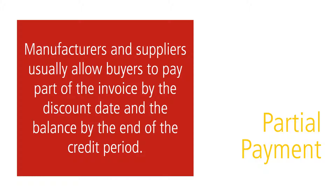Sometimes buyers do not have all the money needed to take advantage of the cash discount. Manufacturers and suppliers usually allow them to pay part of the invoice by the discount date and the balance by the end of the credit period. This partial payment earns partial cash discount credit. A 4% cash discount means the retailer pays 96% of the bill and receives 100% credit — every $0.96 paid earns $1.00 of credit. We must determine how many $0.96 units are in the partial payment to find how many dollars of credit they receive.